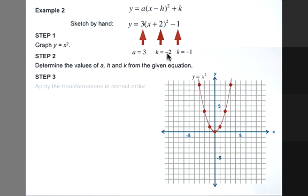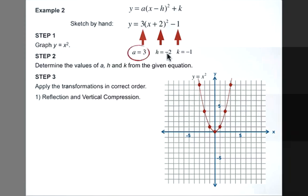Our third step. We're going to apply the transformations in the correct order. Our first transformation that we're going to do is the reflection and the vertical compression. In this situation, there is no reflection because we have a positive number. If it were negative, it would cause the parabola to open downward. But this is positive, so it will remain open upward.